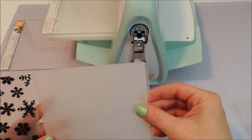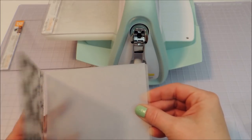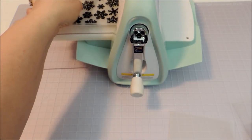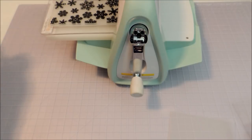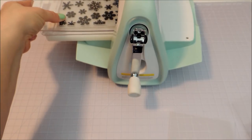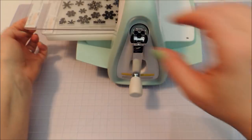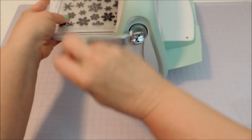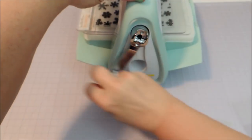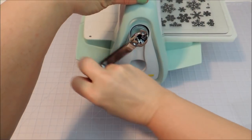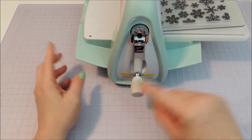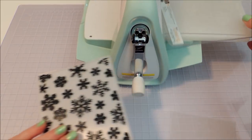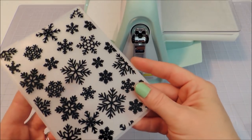I'm going to put that in my Cuddle Bug with my A plate and my B plate. I'm going to top it with another B plate and run that through. With the embossing, I make sure not to run it back again like I do with cutting, because I don't want it to press too hard and end up cutting it.